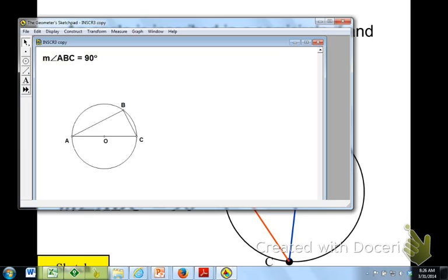So here we have another point B. No matter where I put that vertex, the angle stays 90.